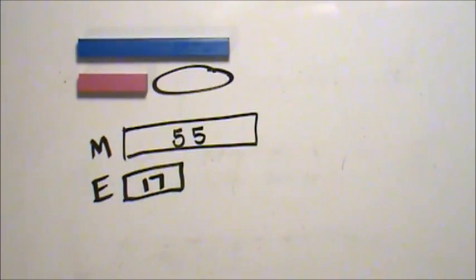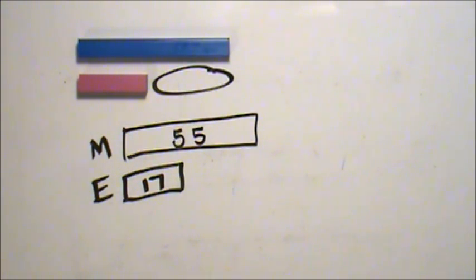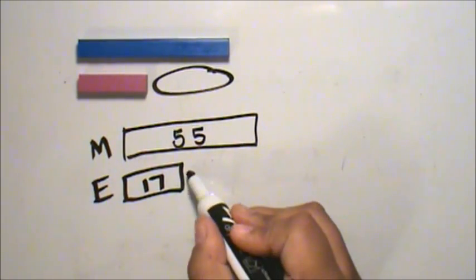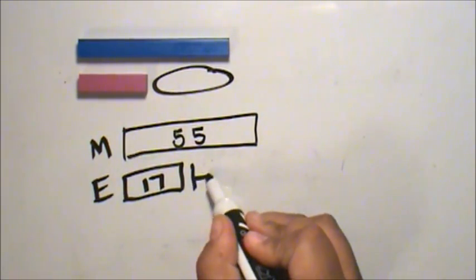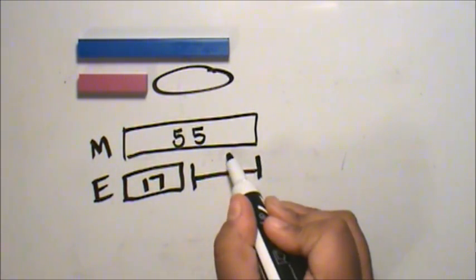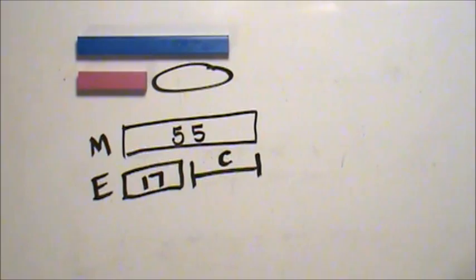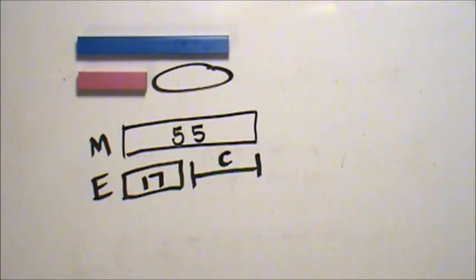Next, I draw a line to show how many more cans Mario brought than Elizabeth. I label this section C for cans. Finally, I write an equation to figure out the value of C, the difference.